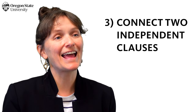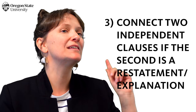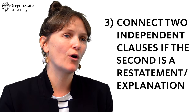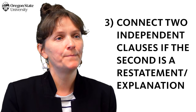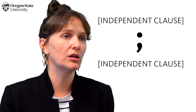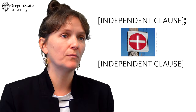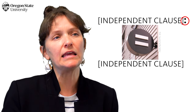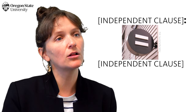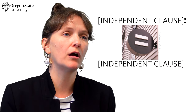Usage number three. We can use a colon to connect two independent clauses, or complete sentences, if the second is a restatement or explanation of the first. This is slightly different than how we use semicolons, where the second clause is adding on more information. If the semicolon is like a plus sign, indicating that you're adding information, then the colon is like an equal sign, indicating that the second clause is the same as the first, just as in our other examples so far.